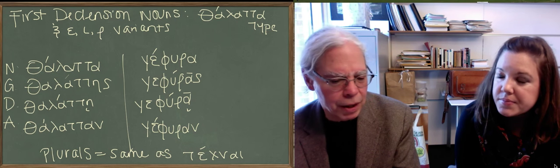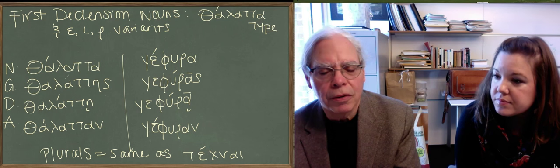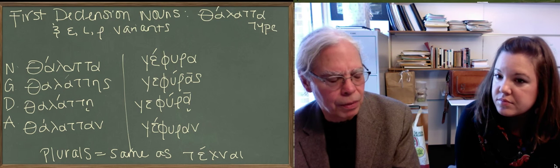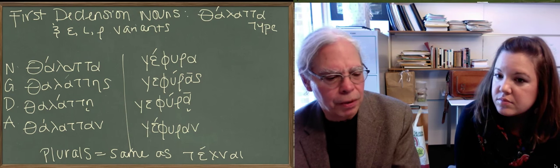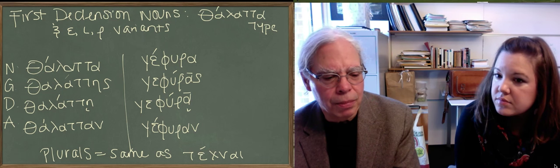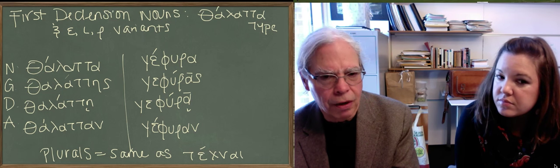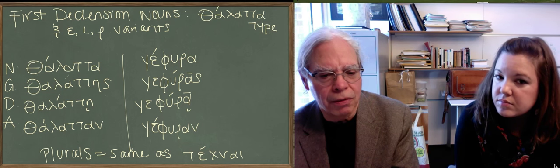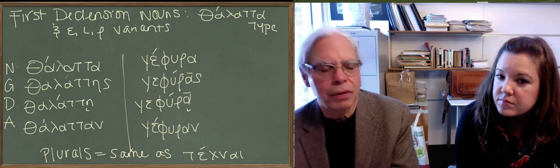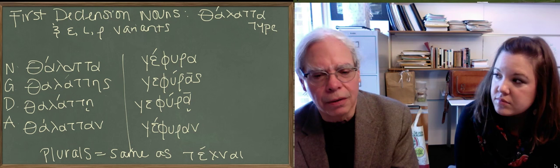So techne goes techne, technes, techne with an iota subscript, and technein. But in the chora type, and you may remember that this only applies to the singular, those etas are all alpha. So it's chora, the genitive is choras, the dative is chora with an iota subscript, and the accusative is choran with a long alpha.